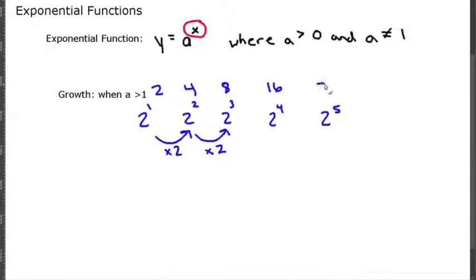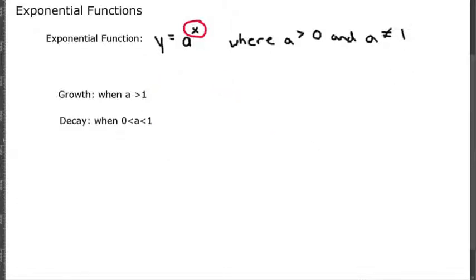Two to the fourth would be sixteen and then two to the fifth would be thirty two. So you can see this change is going from an interval of two right here all the way up, and here is an interval of sixteen, so it's increasing drastically.